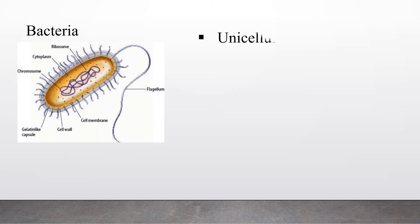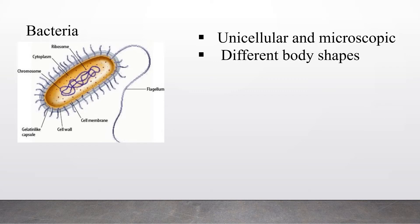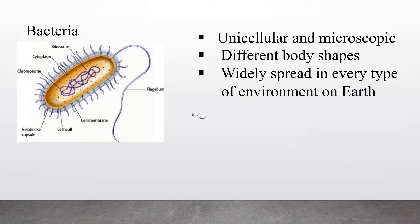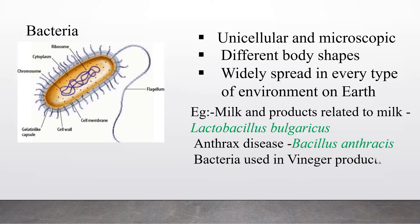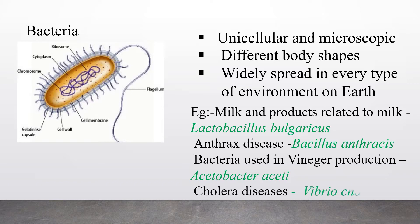First of all we are going to learn about bacteria. All bacteria are unicellular and we can observe them through a microscope. There are different body shapes of bacteria. They are widely spread in every type of environment on earth. Examples include Lactobacillus bulgaricus in milk and milk products, Bacillus anthracis causing anthrax disease, Acetobacter aceti used in vinegar production, and Vibrio cholerae causing cholera disease.